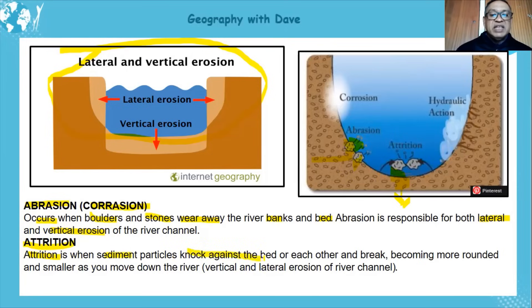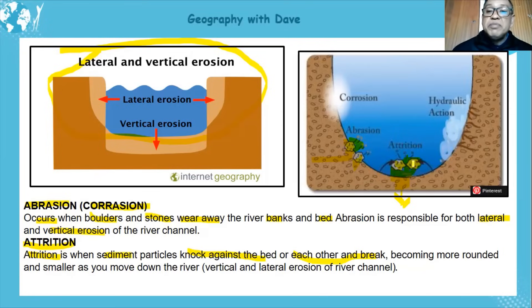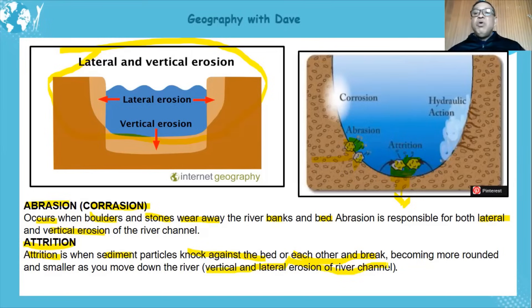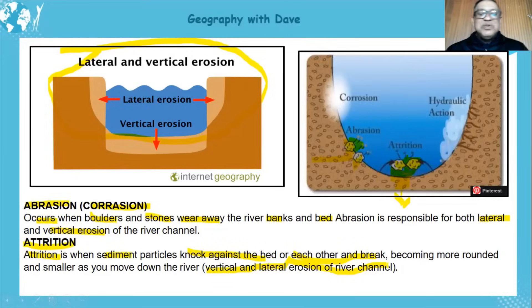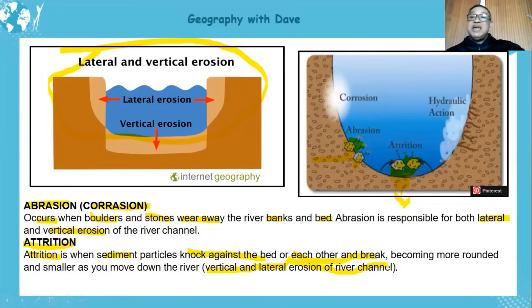Last is attrition — when sediment particles knock against the bed or against each other. The main feature is particles knocking against each other, becoming smaller and adding to the suspended load. As they knock they also contribute to lateral and vertical erosion, widening or deepening the river channel. I hope this gives you a better understanding of why stream load was included in the 2021 guideline — it links directly to fluvial processes and the river profile. All the best learners, goodbye.